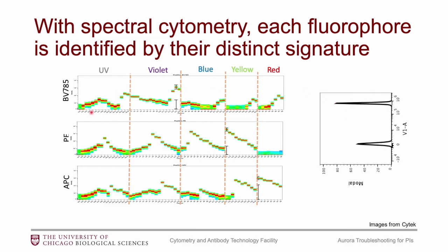The plots are divided by laser, with detectors associated with each laser. The UV laser has 16 detectors — UV1 to UV16. Violet also has 16, so V1 to V16. Blue has 14 detectors, yellow-green has 10, and red has 8 — for a total of 64 detectors.